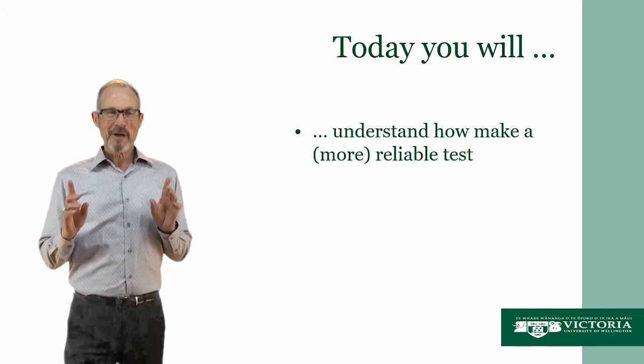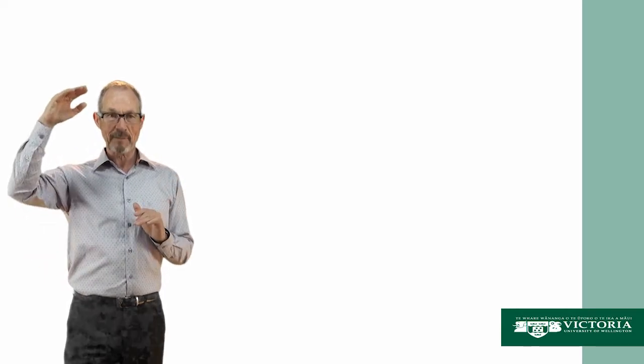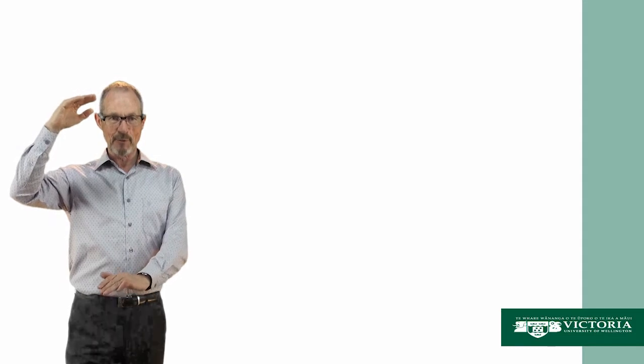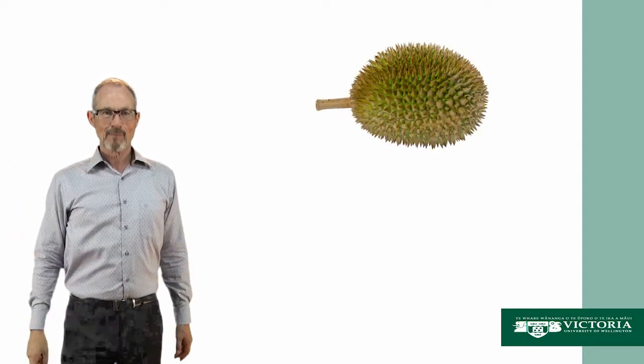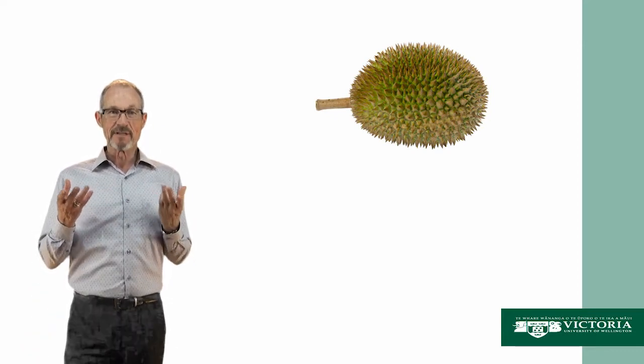I want to start with a little exercise. I want you to look at the picture that's going to appear on the screen and give it a mark out of ten — ten being the high mark, zero being the low mark. Here's the picture: a durian. What score did you give it? Of course I can't know what you gave it, but what I can be sure of is everyone watching will be giving it a different score.